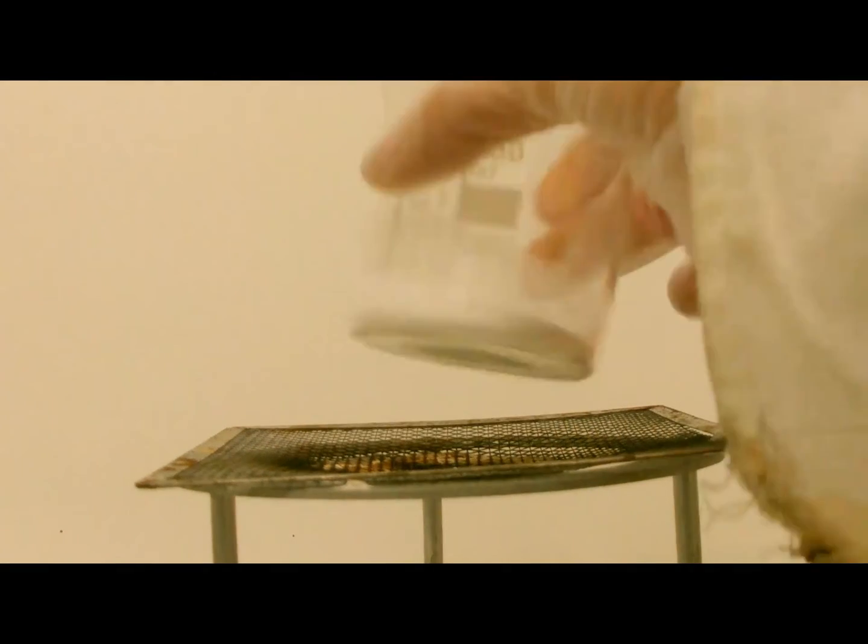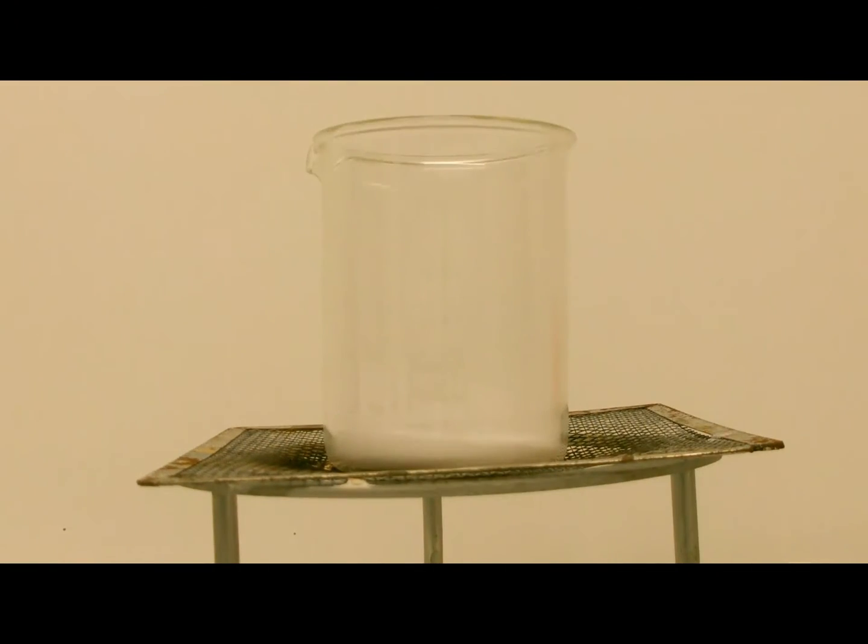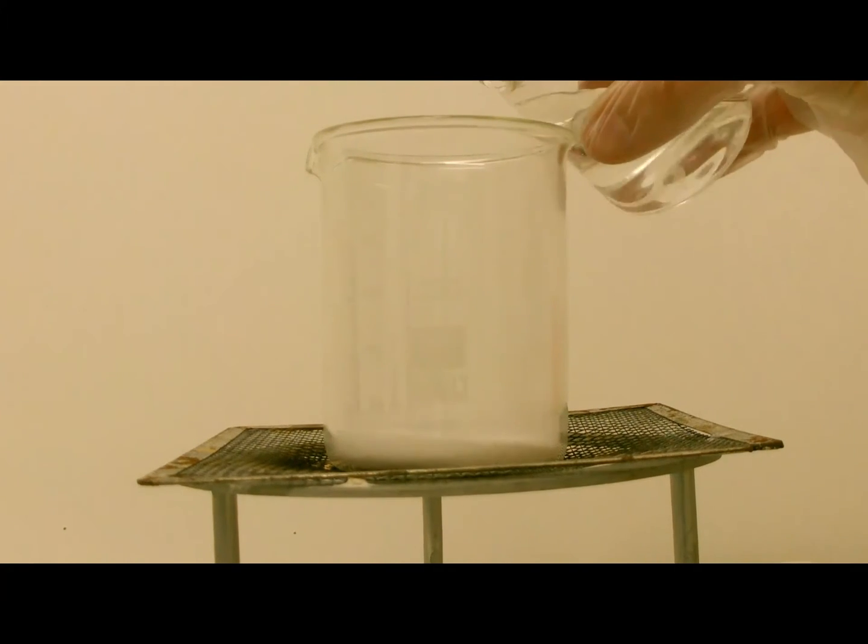So in this beaker we have 2500mg aspirin tablets crushed down to this fine powder, which makes 10g of acetylsalicylic acid, and we will add 50ml of 10% sodium hydroxide solution to it.